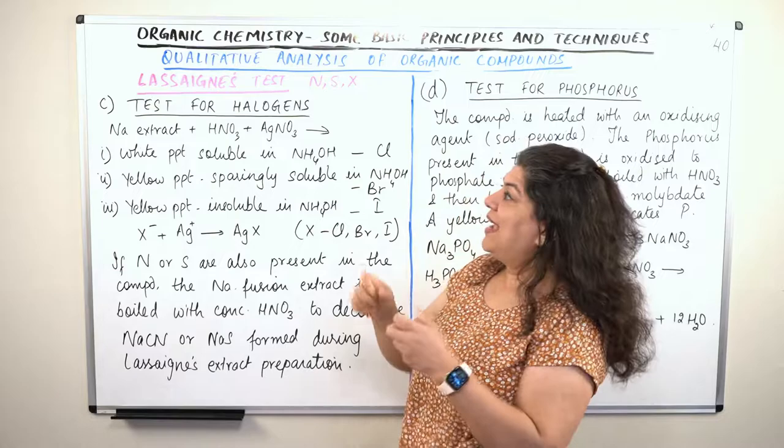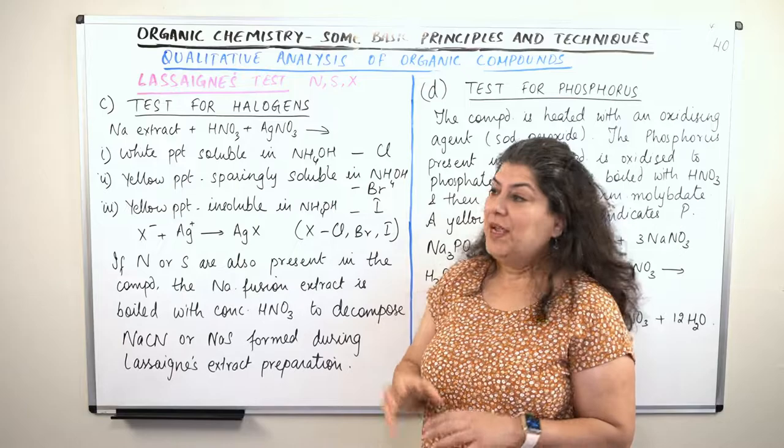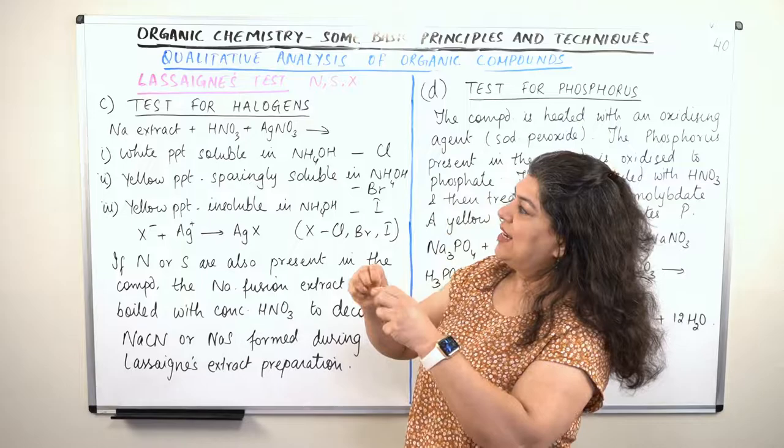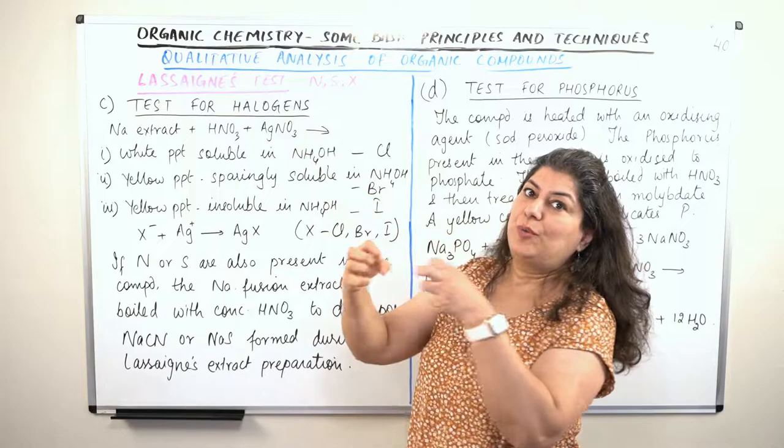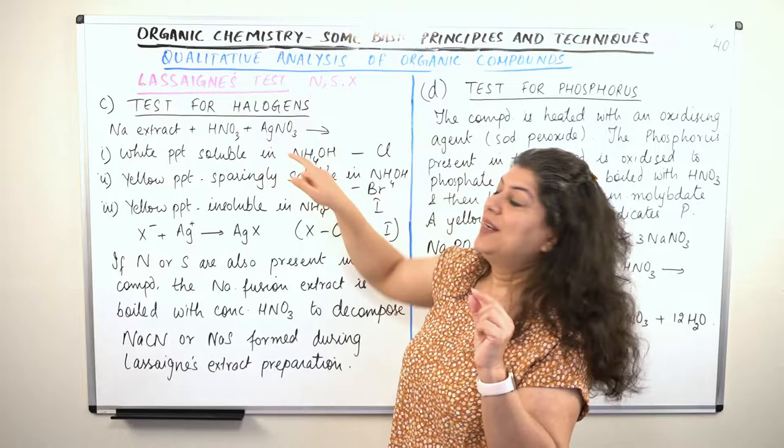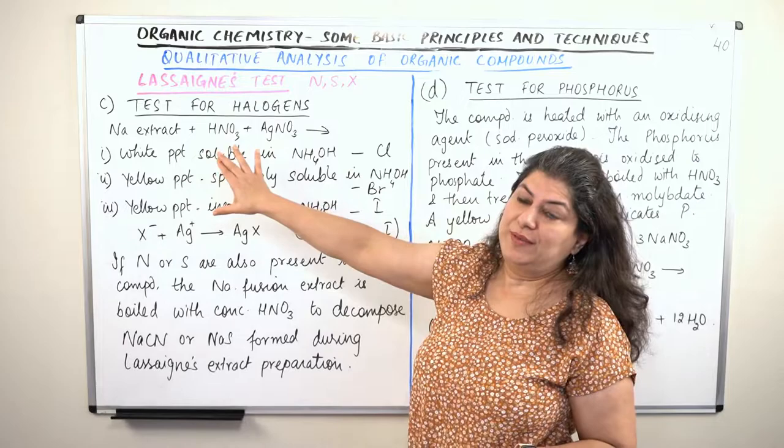The test for halogens. We take the sodium extract and make it react with nitric acid and silver nitrate. The nitric acid is an oxidizing agent; it is added in order to break the halogen away from the sodium salt. The silver nitrate provides the silver that will result in the formation of a silver salt of the halogen.